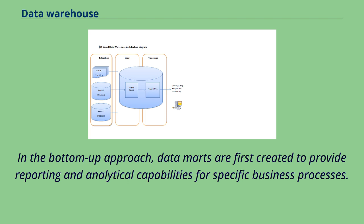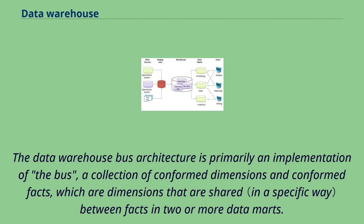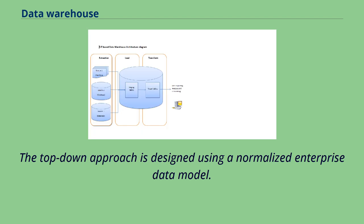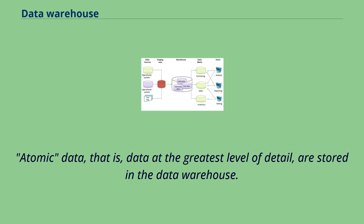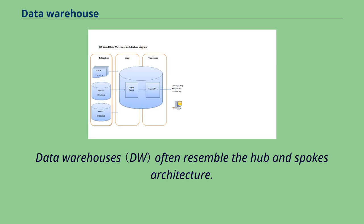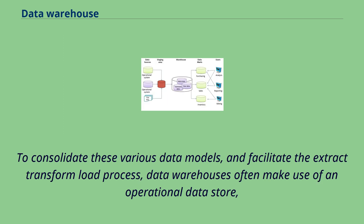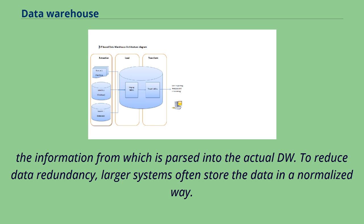In the bottom-up approach, data marts are first created to provide reporting and analytical capabilities for specific business processes, and these data marts can then be integrated to create a comprehensive data warehouse. The data warehouse bus architecture is primarily an implementation of conformed dimensions and conformed facts shared between facts in two or more data marts. The top-down approach is designed using a normalized enterprise data model, storing atomic data at the greatest level of detail in the data warehouse, with dimensional data marts created from it. Data warehouses often resemble the hub-and-spokes architecture, with legacy systems such as CRM and ERP feeding the warehouse.